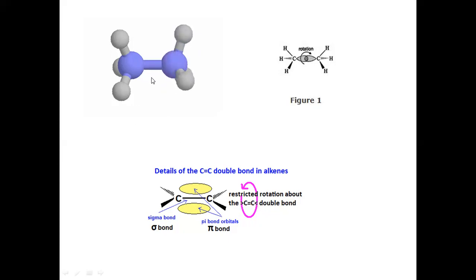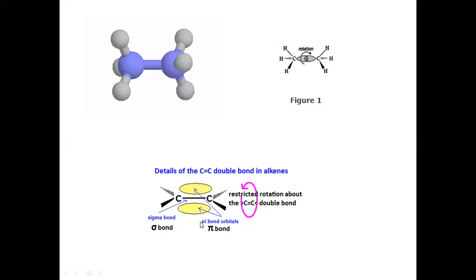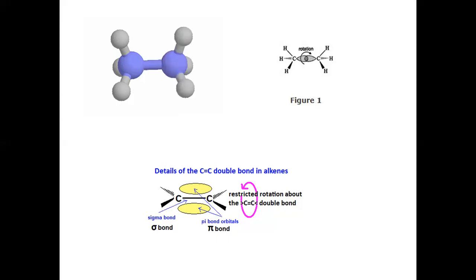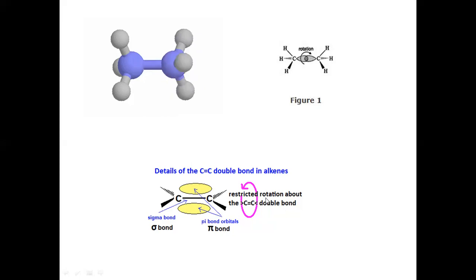The carbon-carbon single bond is freely rotating, but the carbon-carbon double bond will never rotate freely. This means that groups on one side of the double bond remain fixed, so one geometrical isomer will never convert into another isomer. All geometrical isomers arise due to the restricted rotation around the carbon-carbon double bond.